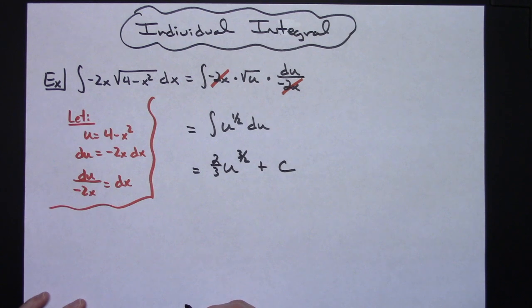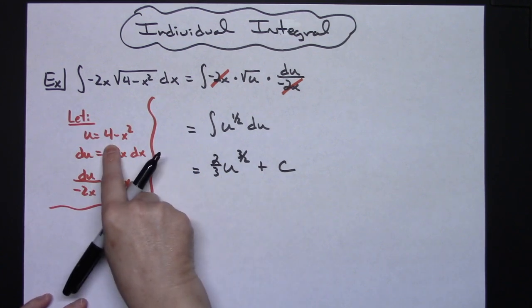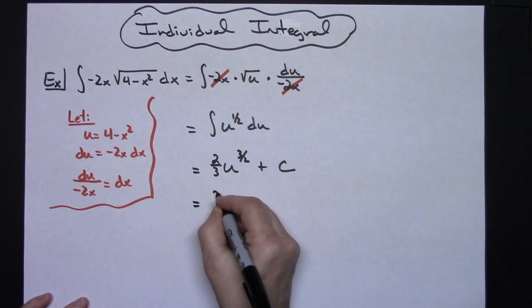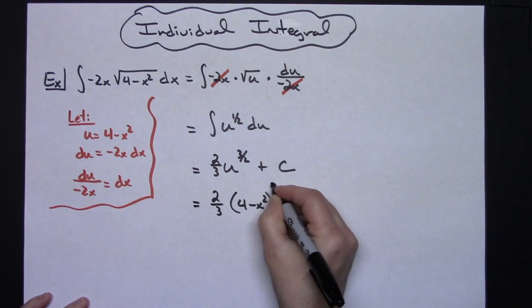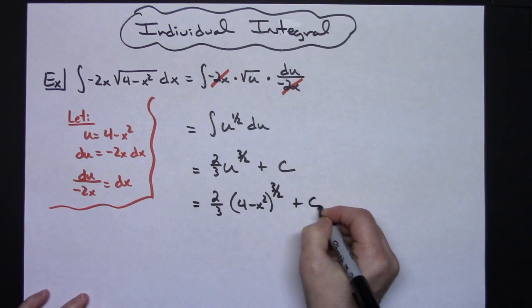I can now replace u with what it equals. So I'll have 2 thirds and I'll have 4 minus x squared raised to that 3 halves power.